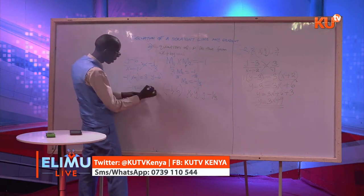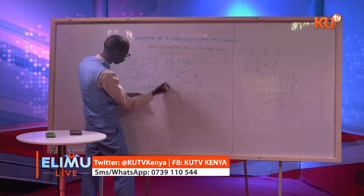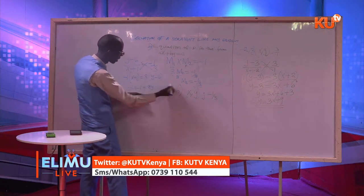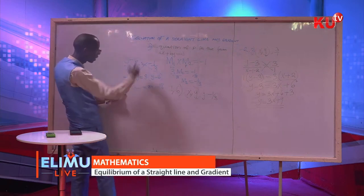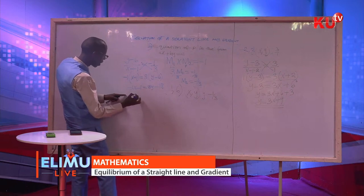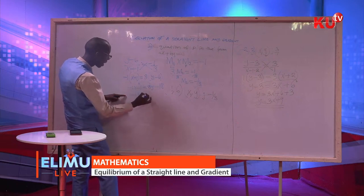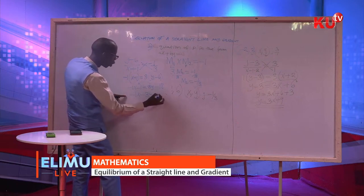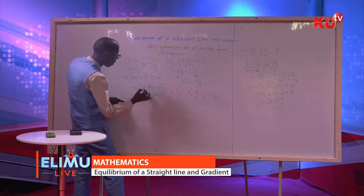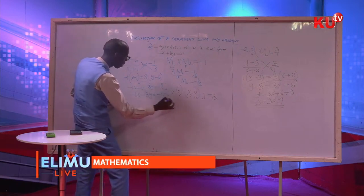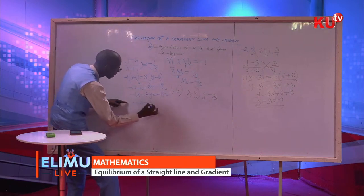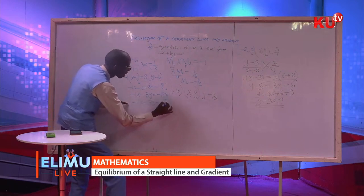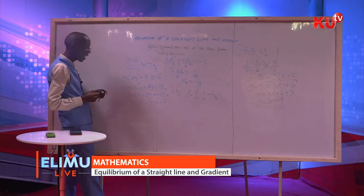Open the bracket: 3 times y is 3y, and 3 times 6 is 18. Now bring y to the other side and take 1 to the other side. Negative 1x — when y comes here, it was positive so it will be negative. Negative 3y is equal to negative 18; take 1 to the other side, it will be plus 1. So we'll have negative 1x minus 3y is equals to negative 17.